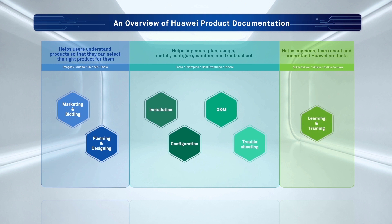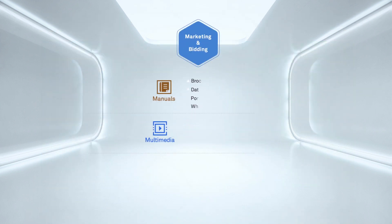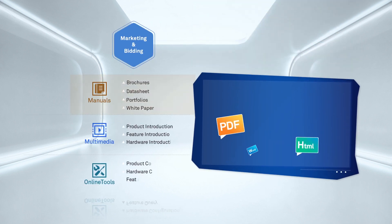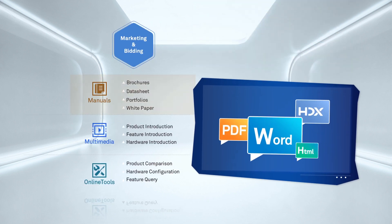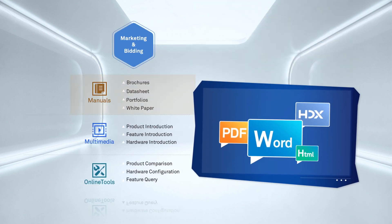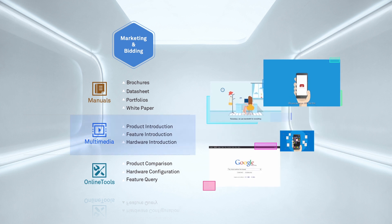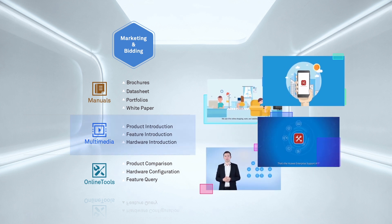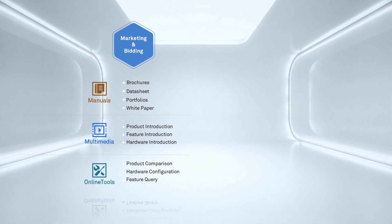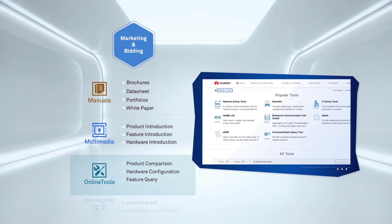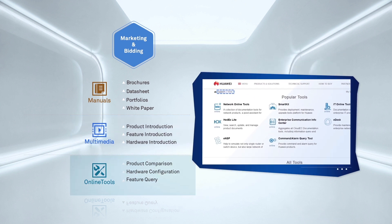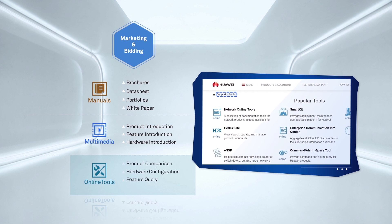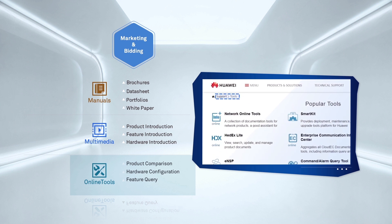For each scenario there are several different types of documentation. Let's take marketing and bidding as an example. You'll see the manuals include brochures, data sheets and product portfolios. There are also plenty of multimedia resources to help you learn about our products, features and hardware more easily. Tools used for product comparison, hardware configuration and feature querying can help you find the information you need very quickly.